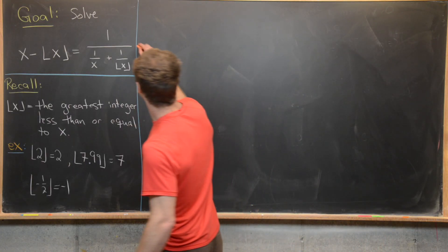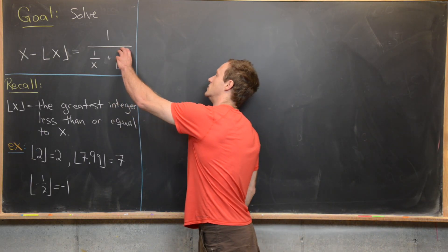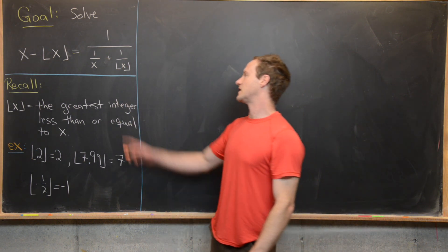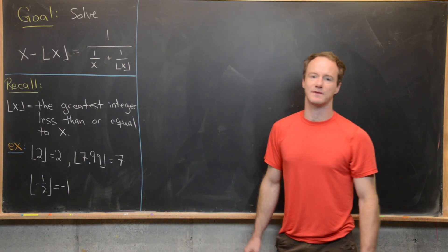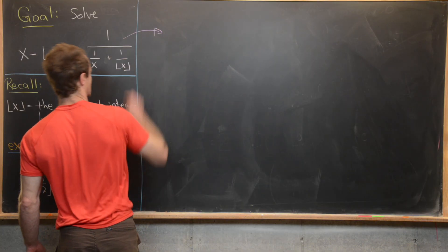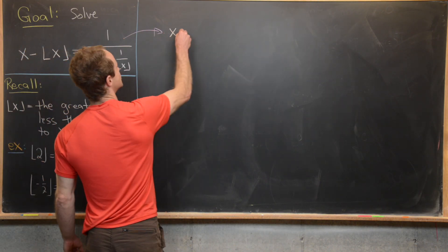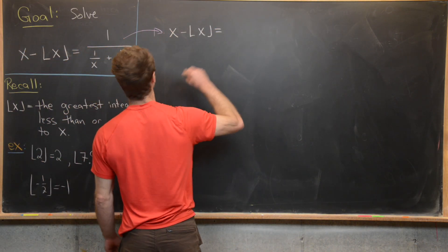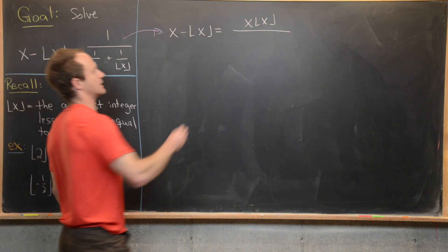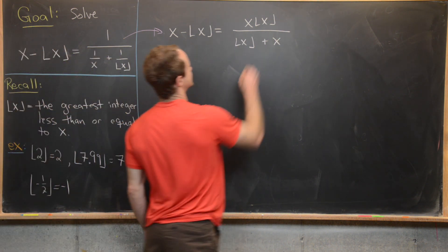The first thing I want to do is take the right-hand side of the equation and multiply the numerator and denominator by the product x times the floor of x. That will clear the denominators in the denominator and introduce something new in the numerator. So we multiply by x·floor(x) over x·floor(x). The left-hand side is unchanged: x minus floor(x) equals x·floor(x) over — multiplying 1/x by x·floor(x) gives floor(x), and multiplying 1/floor(x) by x·floor(x) gives x — so the denominator becomes floor(x) plus x.